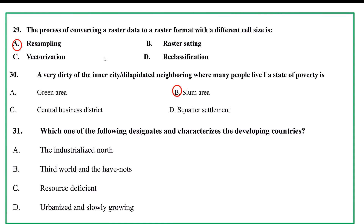Which one of the following designates and characterizes the developing countries? The options include: the industrialized north, the third world, the resource deficient, the urbanized and slowly growing.